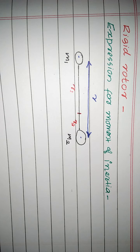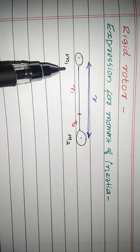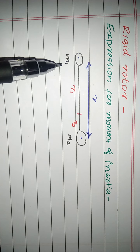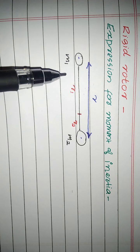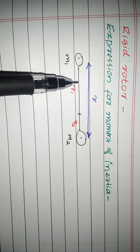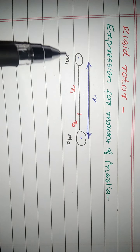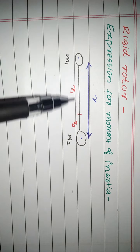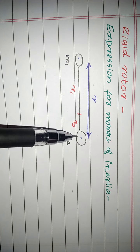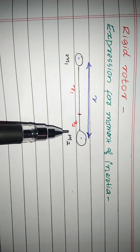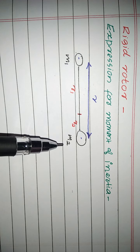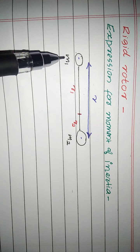Now let's take a look at the concept of the rigid rotor. Here we say that it is a heterodiatomic molecule. It is microwave active because it will change in the dipole moment. Now let's take a look at M1 and M2 — M1 is one mass and M2 is the other, placed at two positions in the molecule.